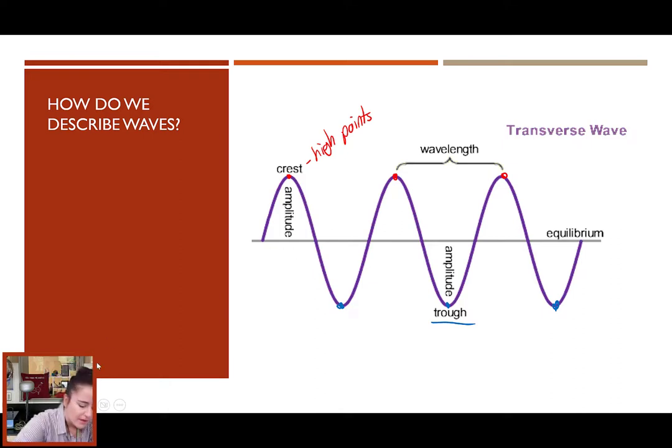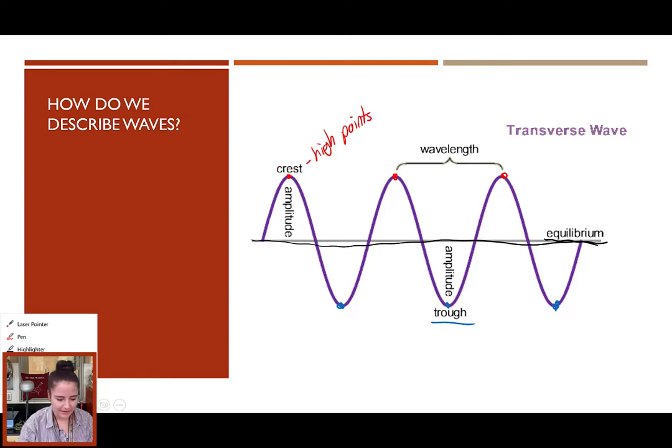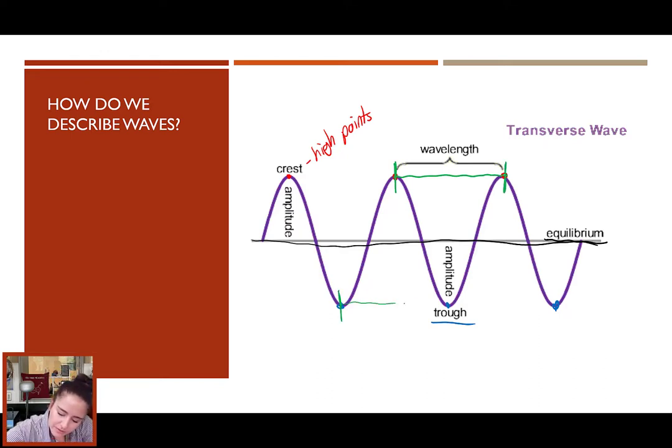We call this line in the middle the equilibrium line, and it's basically where the string would be if there were not a wave going through it. We will often measure the wavelength of the wave, which we could measure from crest to crest. We could also measure wavelength from trough to trough, or we could measure it from equilibrium line, up through crest, through trough, and back to equilibrium line. All three of these measurements would give you an accurate measure of that wavelength. And for wavelength, when we use it in equations and such, it gets the symbol lambda. That is a Greek lowercase lambda, not a w. So, any of these measurements would give you the wavelength.